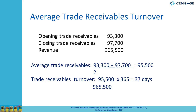The second ratio is the average trade receivable period. The opening and closing receivables figures and revenue figures are given. Average trade receivables come to £95,500. Putting this into the formula — average receivables divided by credit sales, times 365 — gives us 37 days, meaning this business is collecting its receivables in 37 days.